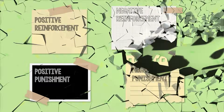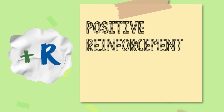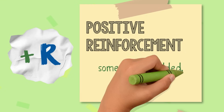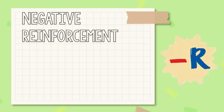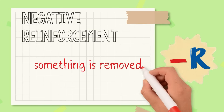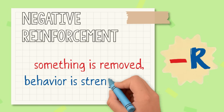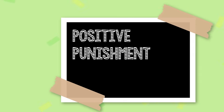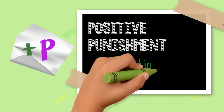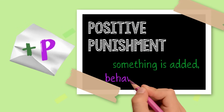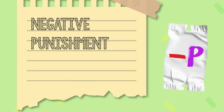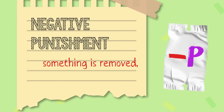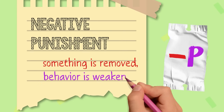Now let's put these parts back together. Positive reinforcement: something is added and this strengthens the behavior. Negative reinforcement: something is removed and it strengthens the behavior. Positive punishment: something is added and this weakens the behavior. Negative punishment: something is removed and it weakens the behavior.